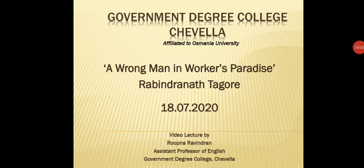Hello students, welcome to the English class. Today let's discuss the short story titled 'A Wrong Man in Worker's Paradise' written by Rabindranath Tagore. This short story is part of the English textbook named 'English in Use' prescribed by Osmania University for its second year undergraduate students. This lesson comes in the third semester and it is part of unit 1.